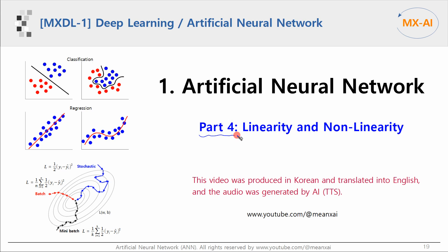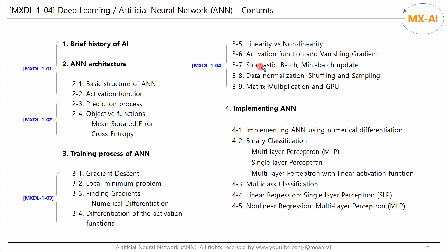This is part 4 of a series on artificial neural networks. In this video, we will look at the linearity and non-linearity of artificial neural networks. This video was produced in Korean and translated into English. My voice was generated by AI text-to-speech. We will also look at activation functions and the vanishing gradient problem, different ways to update parameters, data normalization and shuffling, and matrix multiplication and GPU.